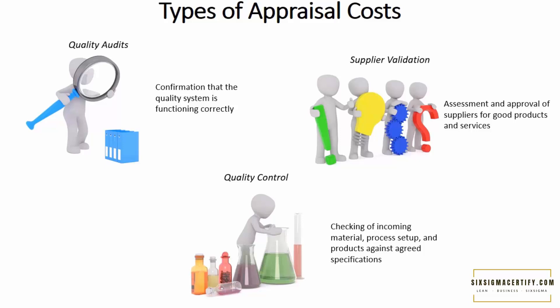These two costs — appraisal cost and prevention cost — are the costs of good quality. In the next lecture, we will also be learning about other types of costs, specifically the cost of poor quality.